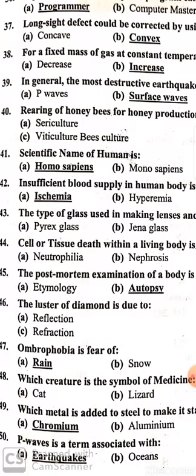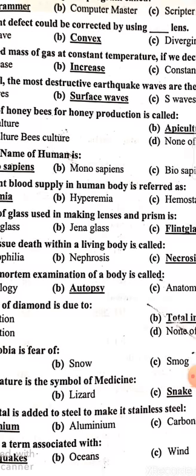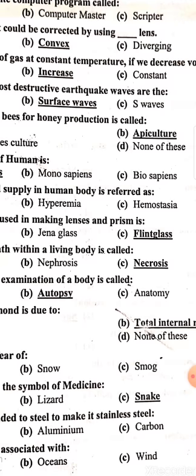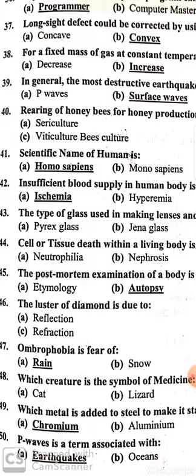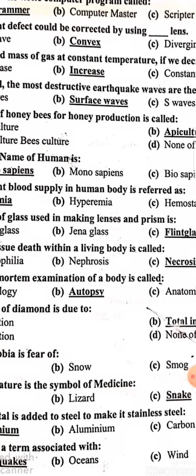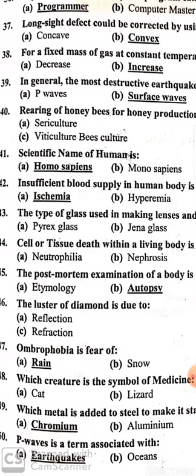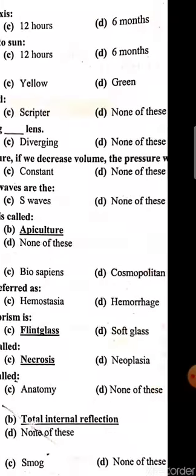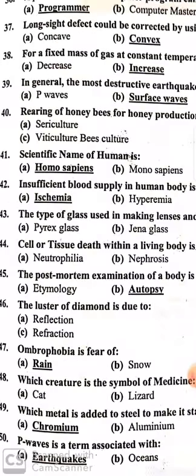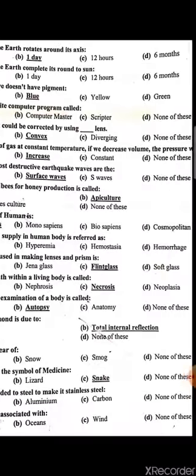Ombrophobia is the fear of rain. Which creature is the symbol of medicine? The snake. Which metal is added to steel to make it stainless steel? Chromium. Seismophobia is a term associated with the fear of earthquakes.